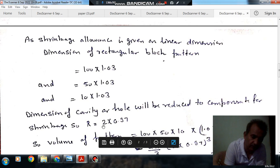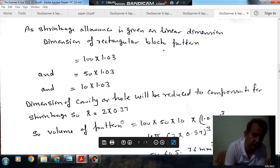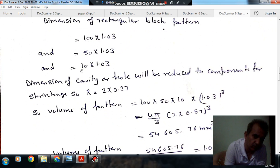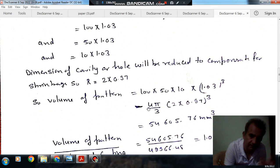Radius of pattern will be 2 x 0.97 because 3% shrinkage allowance is given on the cavity. So the volume of the pattern will be 100 x 1.03 x 50 x 1.03 x 10 x 1.03 minus 4π/3 x (2 x 0.97)³.